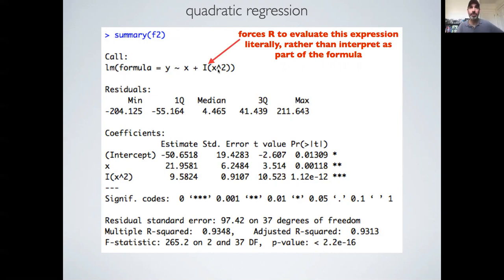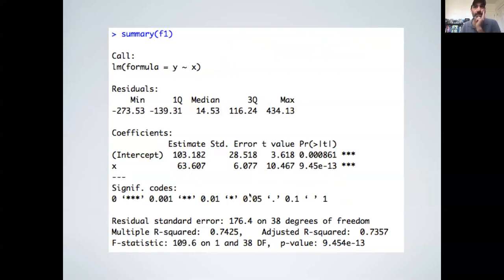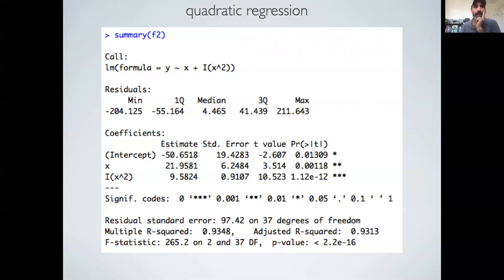So we're forcing it to interpret that literally, and we get back our standard set of residuals. We get back our intercept, our slope, and the coefficient in front of our x squared term. We can see that this is highly significant for all the parameters, and we can see that our R squared went up. Just as a reminder, in our simple linear model, the R squared was about 74%, and now by going from a linear model to a quadratic, it went from 74% to 93%. We're doing quite well.